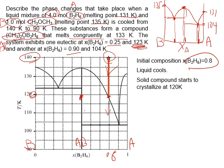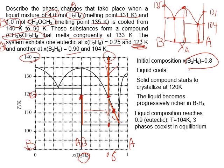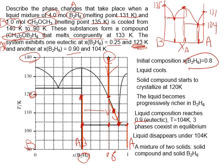As cooling continues, the liquid composition shifts — it becomes progressively richer in B (P2H6) as AB continues to crystallize out. Eventually the liquid reaches the eutectic composition of 0.9 at 104 K. At this point, three phases coexist: the liquid mixture, solid AB, and solid A. If cooling continues, all the liquid solidifies at this temperature into two solids — solid A (C2H6) and solid AB.